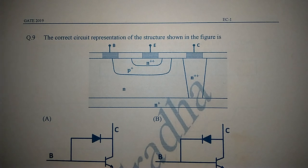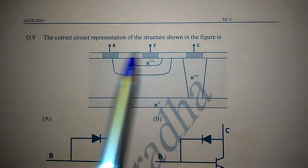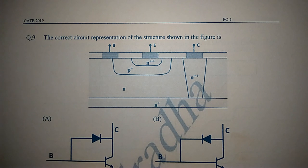So if we observe the arrangement, there are three letters: B, E, C - that means base, emitter, collector. So the given circuit contains one BJT transistor.